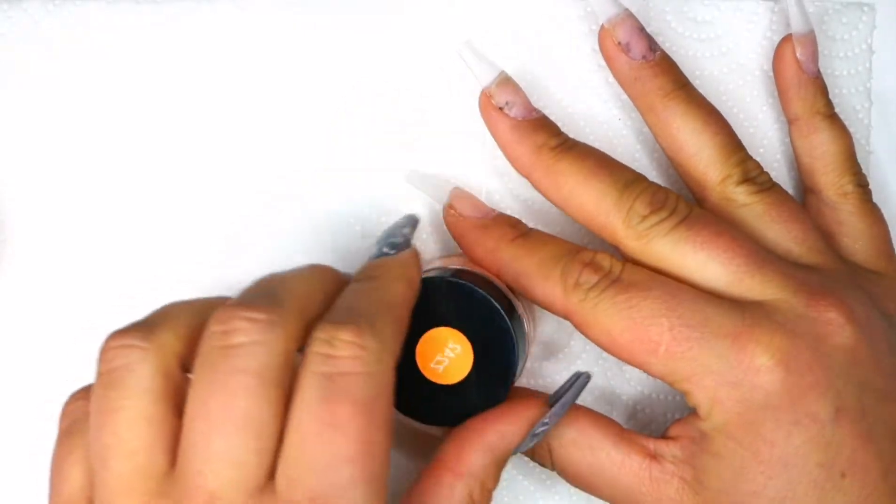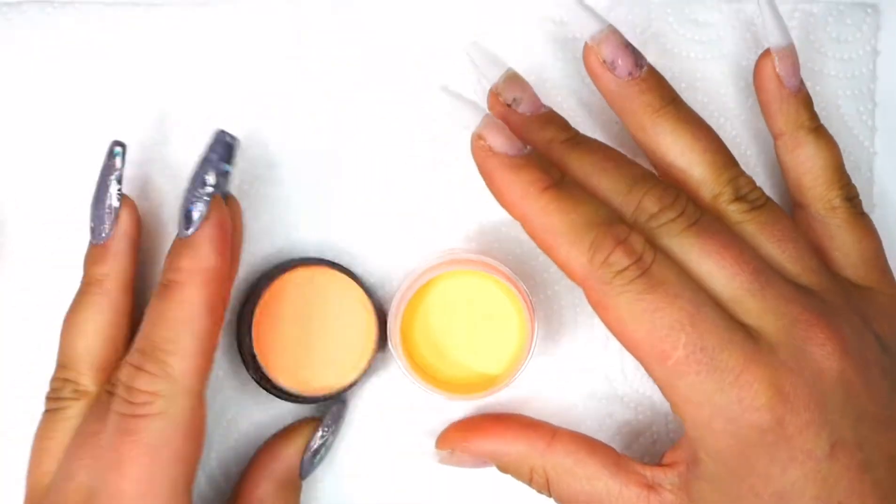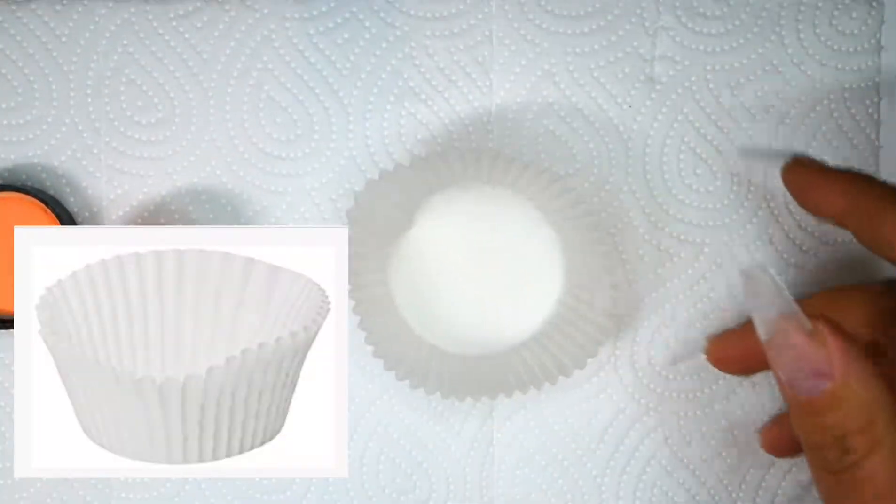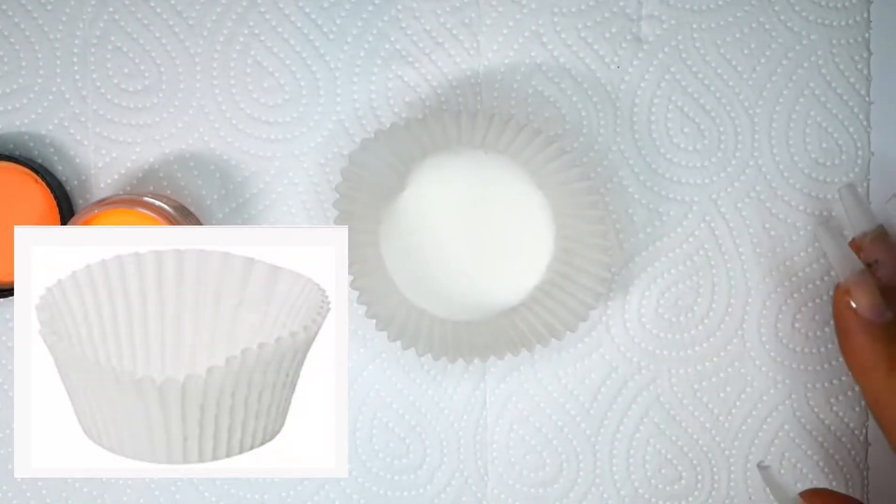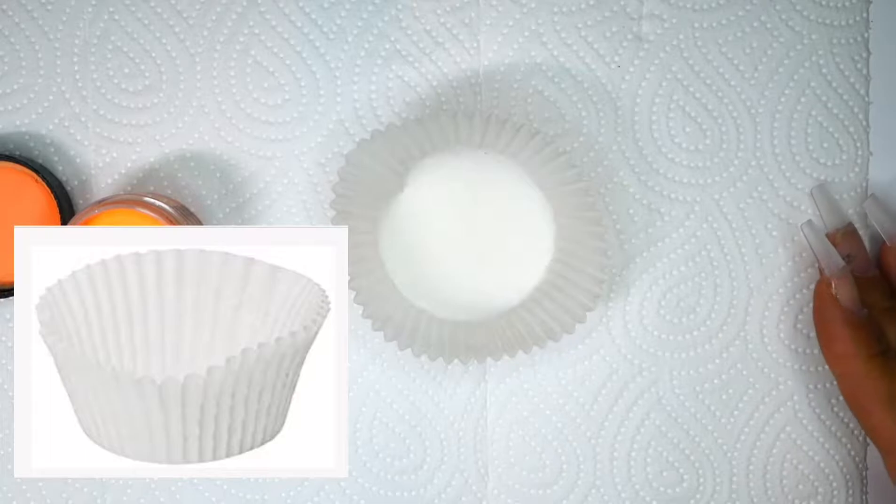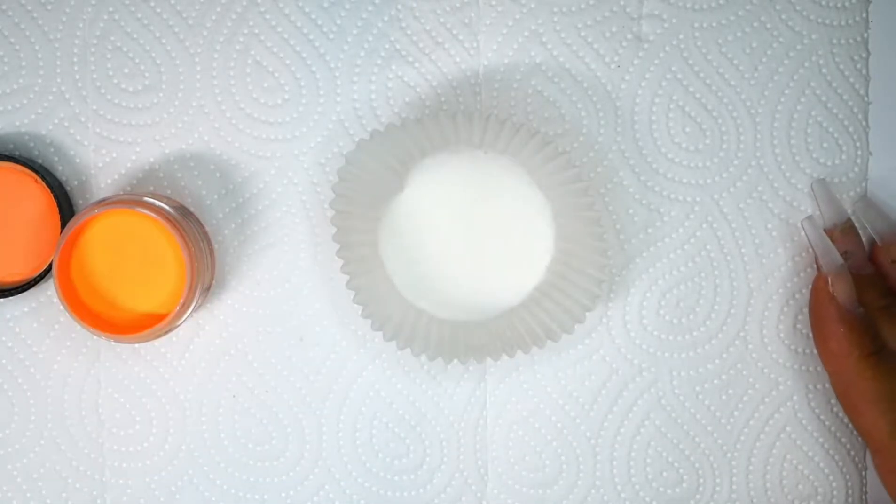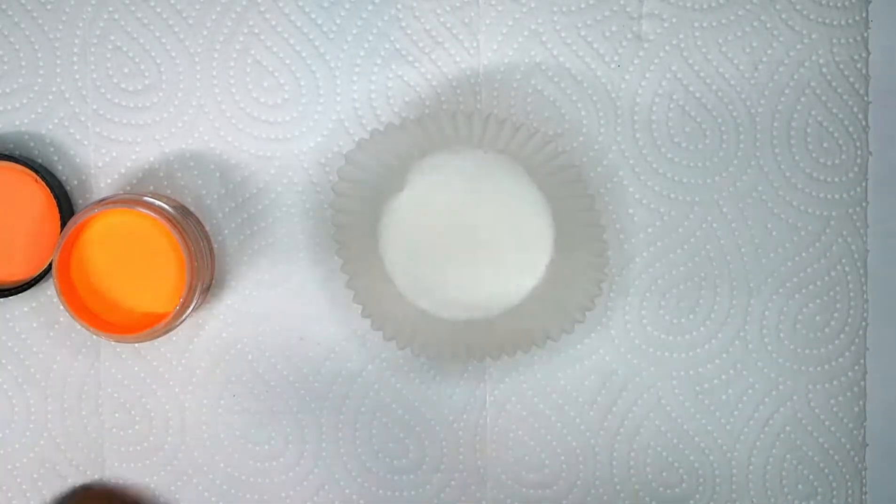I'm going to be using these paper cupcake liners and they're really easy to use because they're disposable. I want to catch all the powder that drops off, don't want to waste anything.